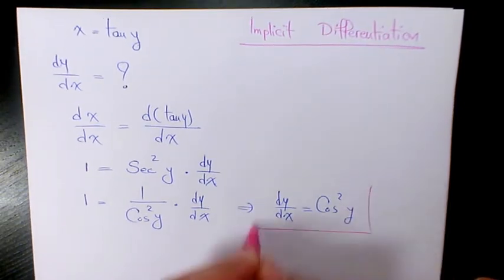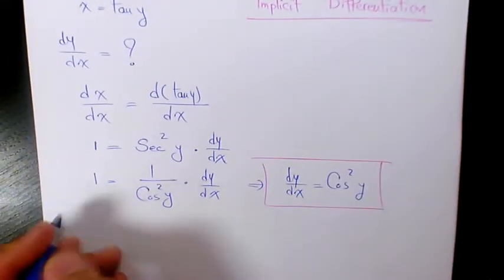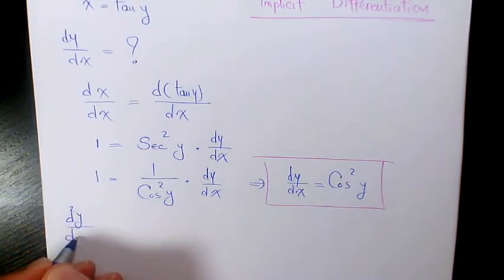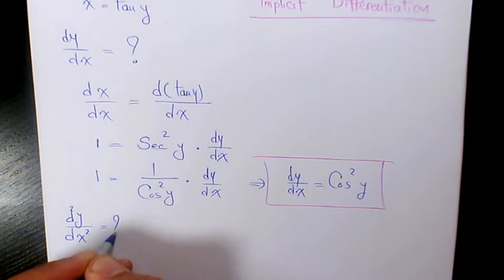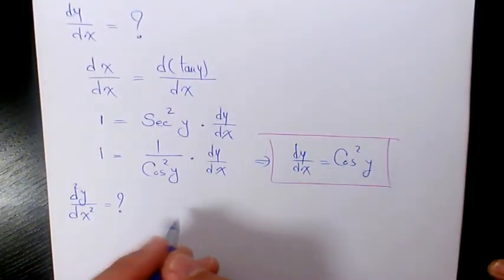So that's going to be the derivative. Let's see if somebody asked us to find out the second derivative, d squared y over dx squared. We need to find out the derivative of this part.